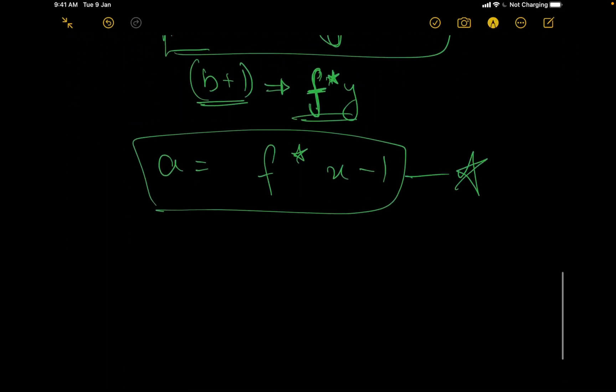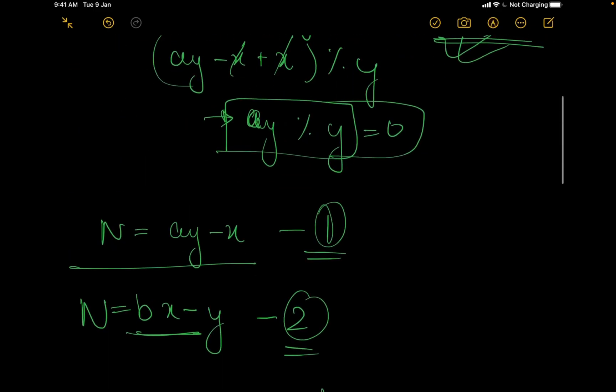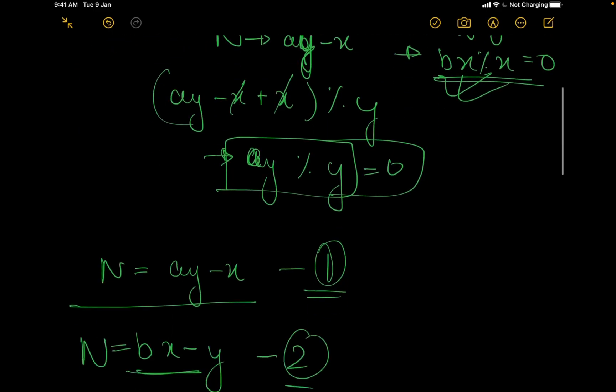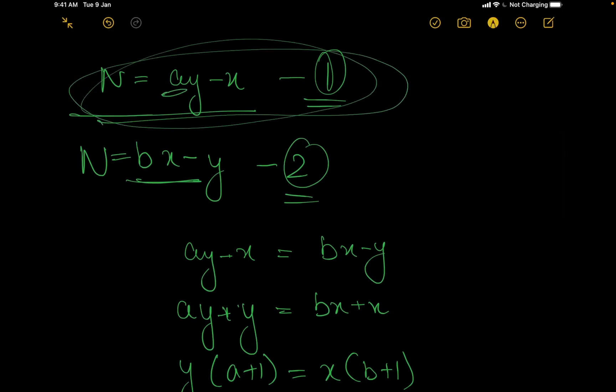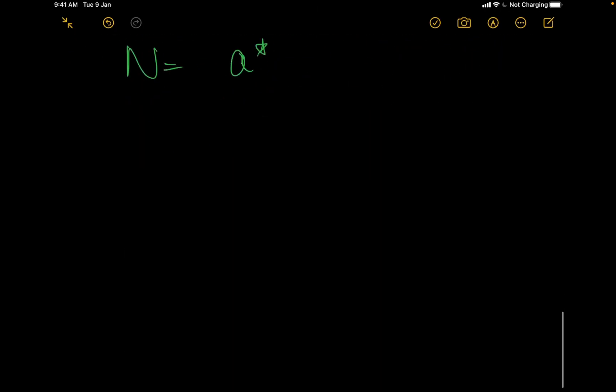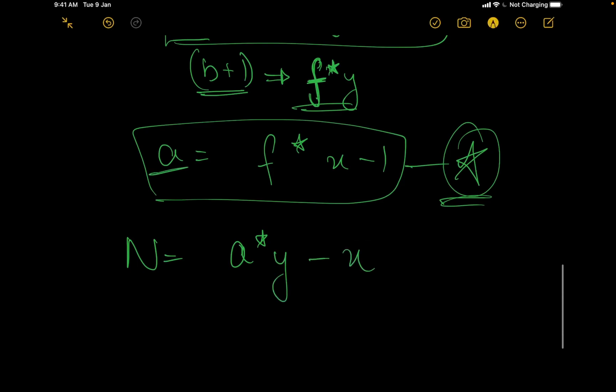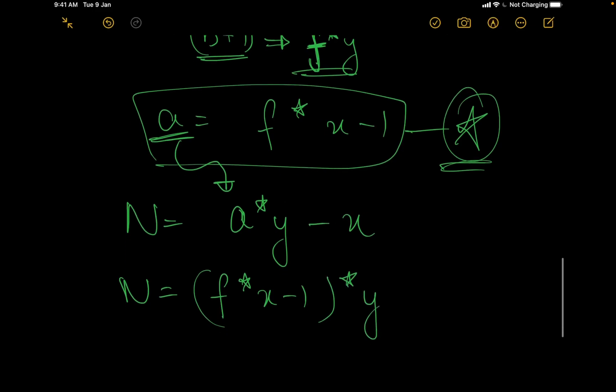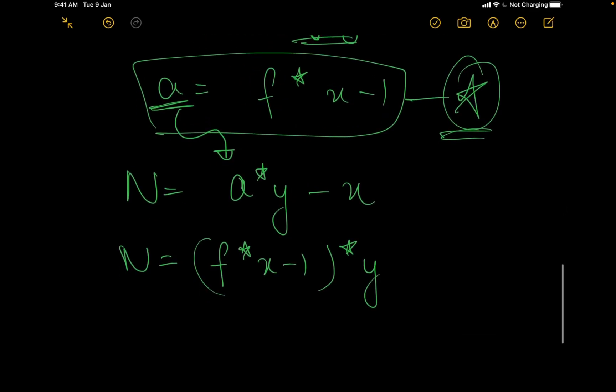Once we have this, we can try to substitute the value in the equation that we initially got. The equation we were having was that n is equal to a times y minus x. I will get n is equal to f times x minus 1 times y minus x. This is the equation I will be getting.